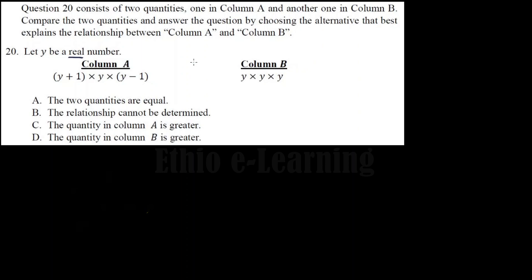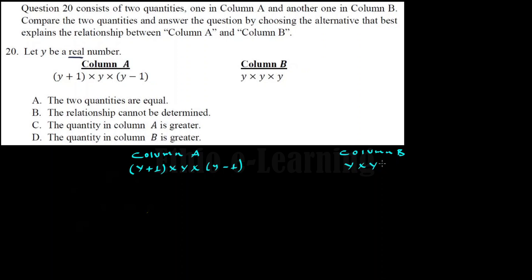Now, if we are doing a quantitative comparison, we will simplify the expressions. Column A has the quantity (Y+1) times Y times (Y-1), and Column B has the quantity Y times Y times Y.